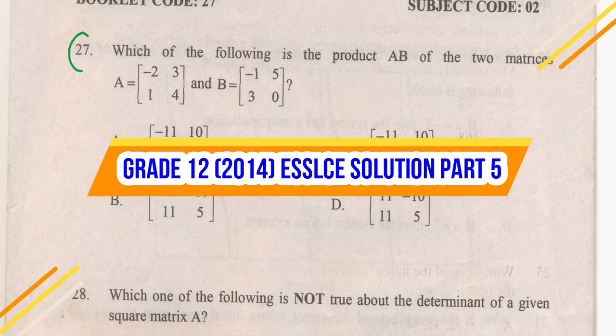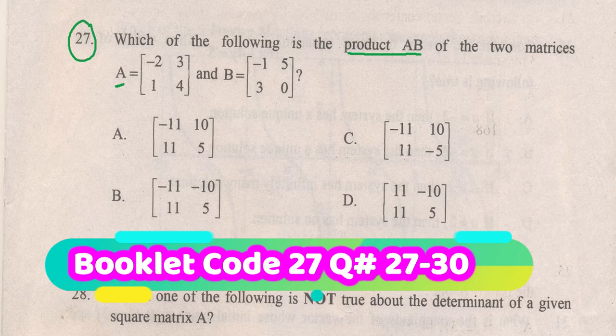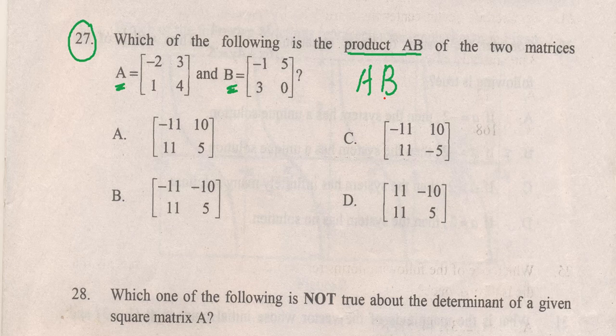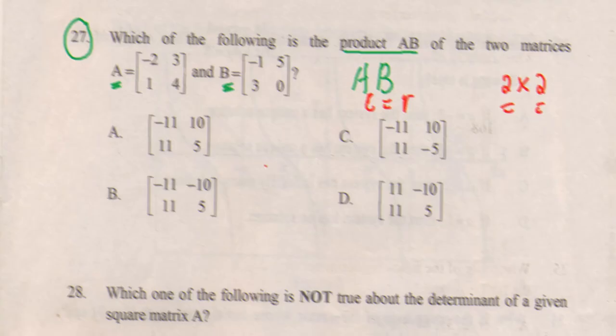Question number 27 asks which of the following is the product AB of two matrices given by these values. We have to multiply A and B and obtain the result. To multiply A with B, we have to check if the number of columns of the first matrix A is equal to the number of rows of the second matrix B. In this case, both matrices are two by two, so row and column are equal, and we can multiply A by B.